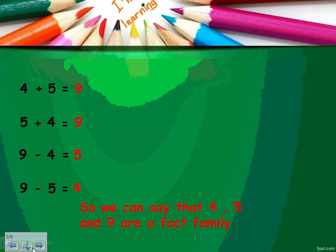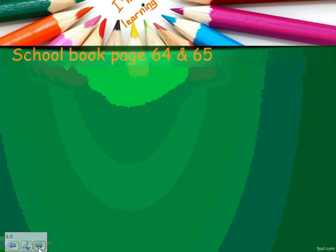Why are they a fact family? They are a fact family because they form four facts. What are these four facts? The first: four plus five equals nine. The second: five plus four equals nine. The third: nine minus four equals five. And the fourth: nine minus five equals four. Please don't forget that the order is not important in addition, as in facts one and two.